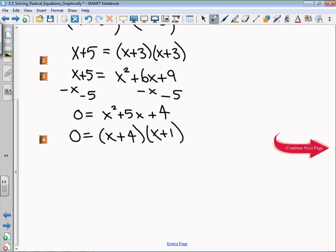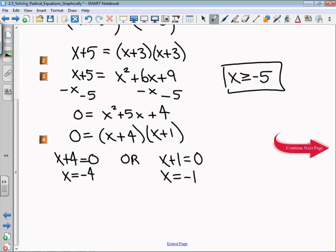That is factorable into x plus 4 times x plus 1. I get my two solutions because I have a factor times another factor equal to 0, one of those factors must be 0. The x plus 4 being equal to 0 results in x equals negative 4, x plus 1 being equal to 0 results in x equals negative 1. We did identify that x had to be greater than or equal to negative 5. Both of those solutions seem okay, both are greater than or equal to negative 5.